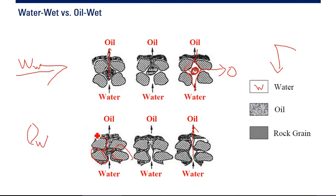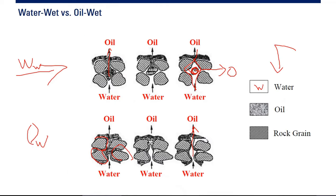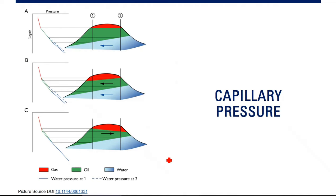That's for wettability. The next section is also very important — it's about capillary pressure. Capillary pressure will influence, will govern, will determine the contact. Water-oil contact or gas-oil contact will be determined by the capillary pressure. And of course, capillary pressure is related to wettability as well. That's why we need to learn about wettability before learning about capillary pressure.